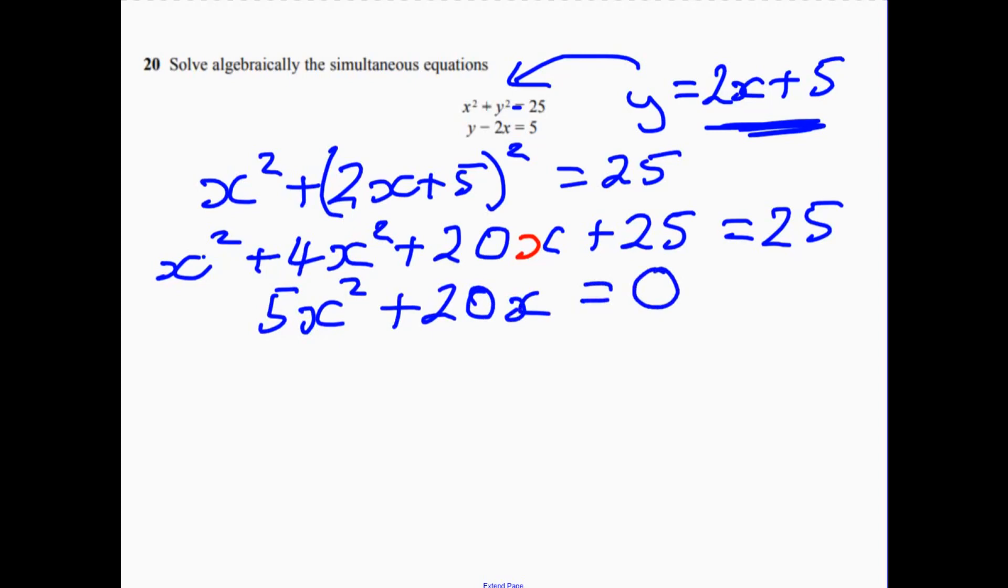OK, so let's factorize. Take out 5x, and then we get x plus 4 equals 0.